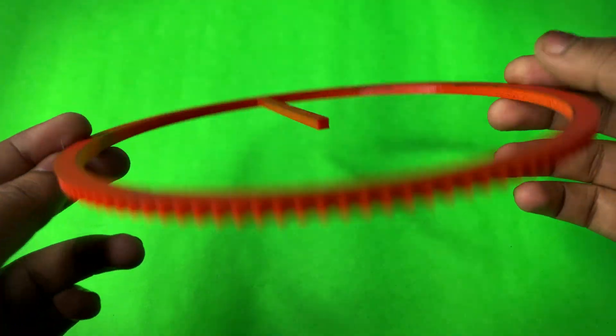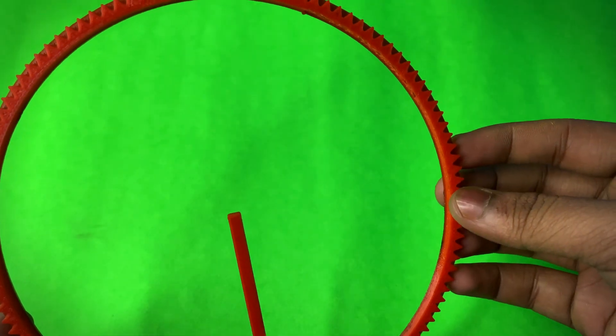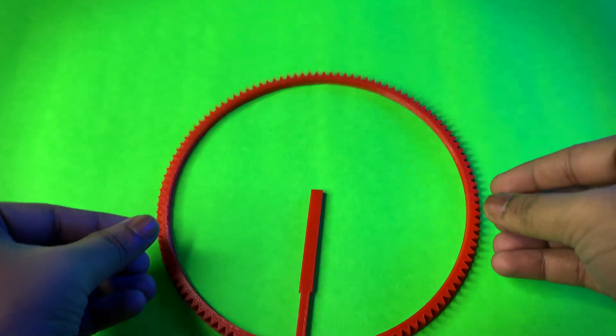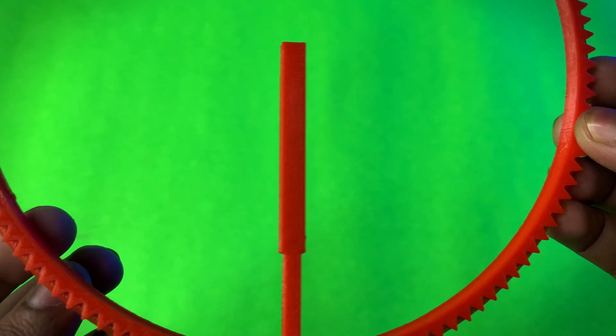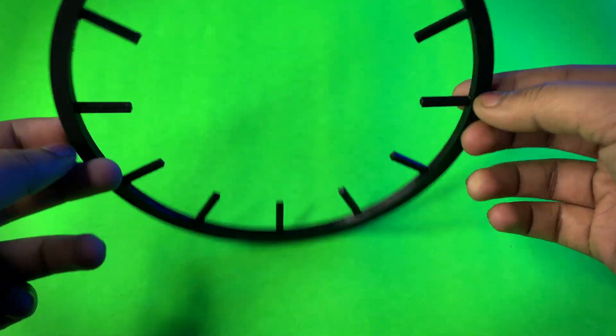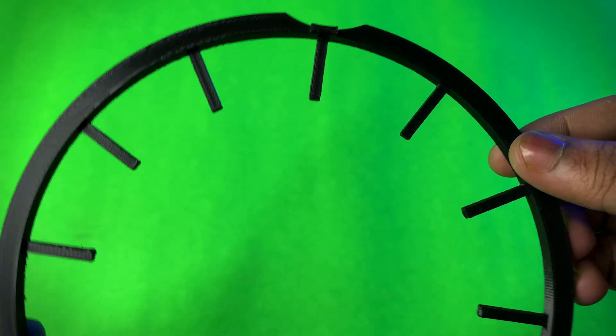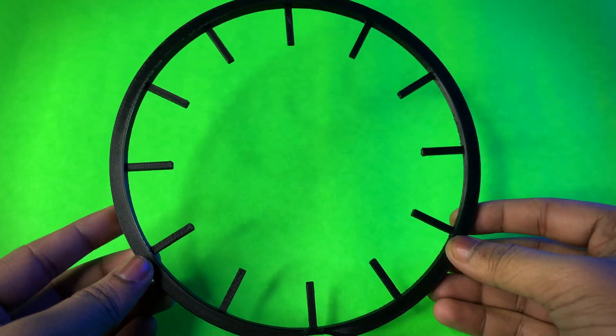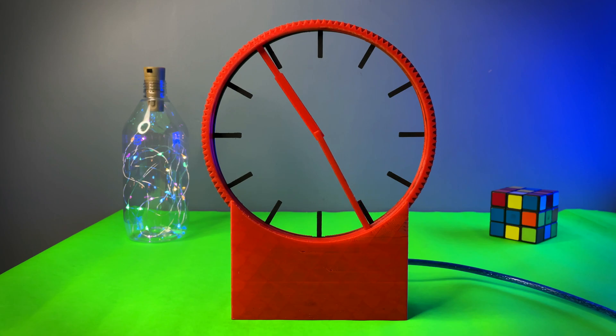This is the minute ring. This is the hour ring. And this is the dial ring. And after the whole setup, it will look like this.